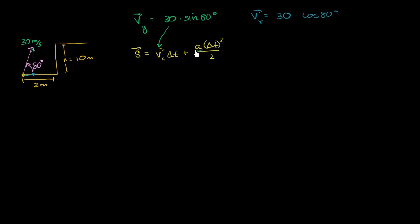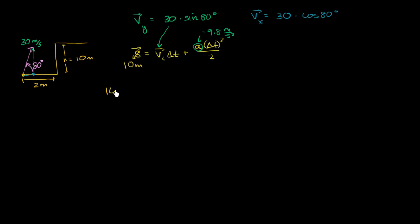We know the acceleration. Our convention when dealing with the vertical dimension is up is positive, down is negative. So acceleration is negative 9.8 meters per second squared. What is the total displacement? We're starting at ground level, just talking about the vertical. Our total vertical displacement is going to be 10 meters, so this value is 10 meters.